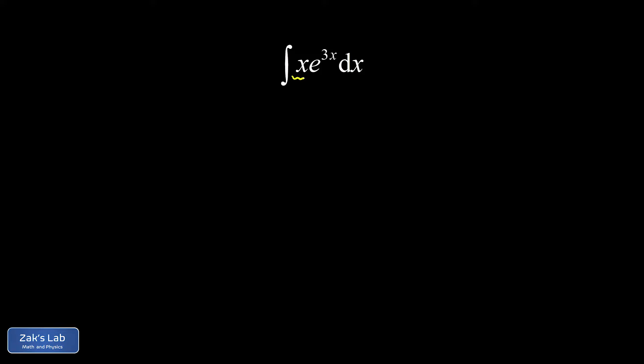So the natural choice here is to choose u equals x, and then the rest of the integral is going to be dv, this differential quantity because it has a dx tacked onto it.